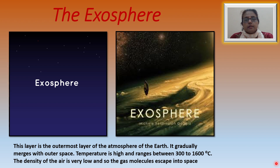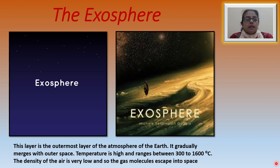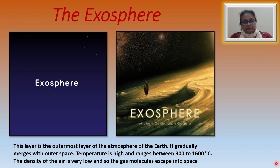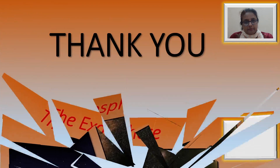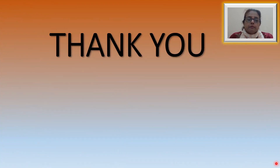The exosphere is the outermost layer of the Earth's atmosphere. It gradually merges into outer space. Temperature is very high, ranging between 300 to 1,600 degrees centigrade. The density of the air is very low, so gas molecules escape into space. In this module, we learned about the structure of the atmosphere and the characteristics of each of its layers.